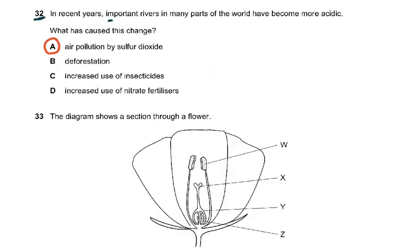Question 32: In recent years, ponds and rivers in many parts of the world have become more acidic. It couldn't have been insecticides, deforestation, or nitrate fertilizers. The only possible answer is air pollution by sulfur dioxide, because sulfur dioxide in the air combines with water to form sulfuric acid, which is washed into rivers, lakes and ponds. So the answer was A.